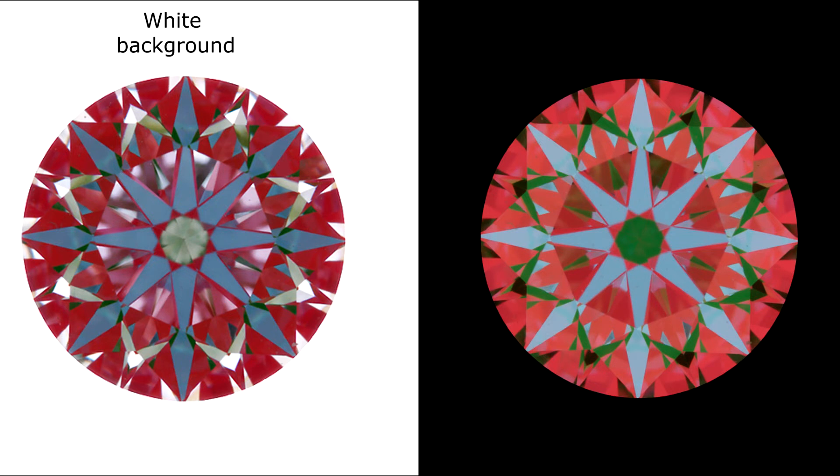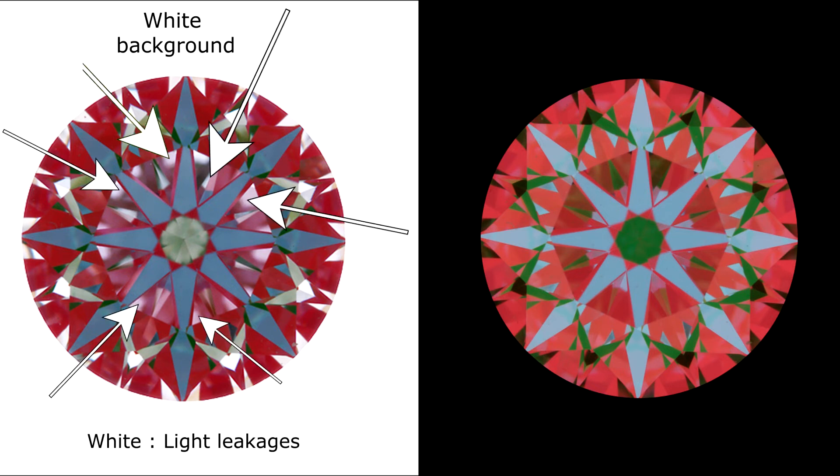However, what happens if we take a poor light performing diamond? Over here, I have an ASET scope of a poor light performance diamond under a white littered background. Now you notice at the middle area of the diamond, there are lots of white areas. These are all bad light leakages that you want to avoid at all costs.